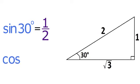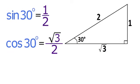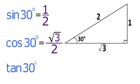The cosine of 30 degrees equals A over H, which equals radical 3 over 2. And the tangent of 30 degrees equals O over A, which equals 1 over radical 3.